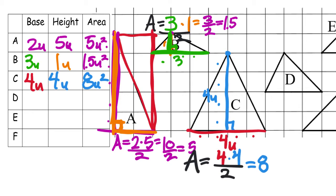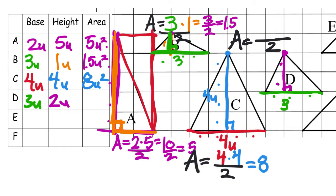And then triangle D as well. I go from the top tip and follow the line down, which makes a 90-degree angle with the bottom length. The base is one, two, three — three units. And the height is one, two — two units. To find the area: base three times height two, divided by two. That gives us an area of three square units.